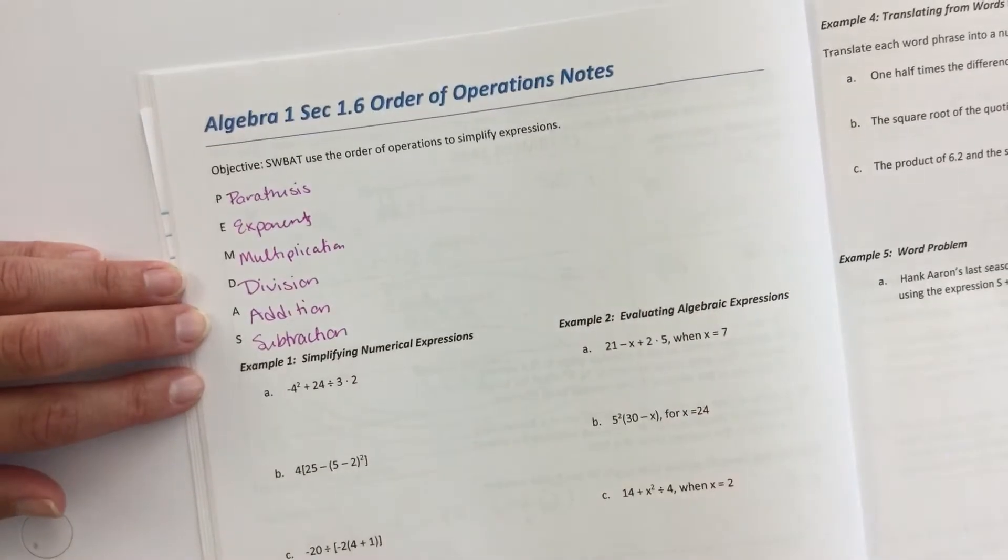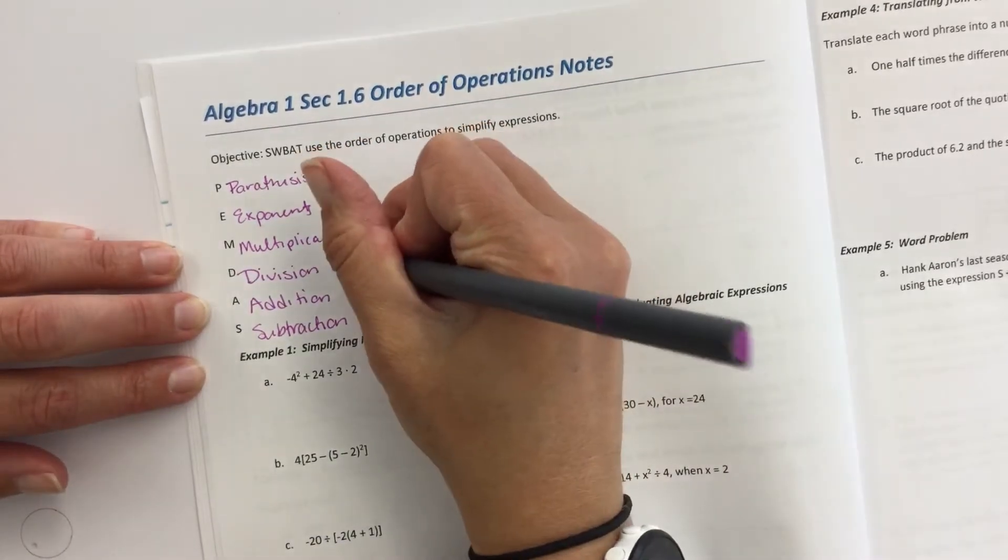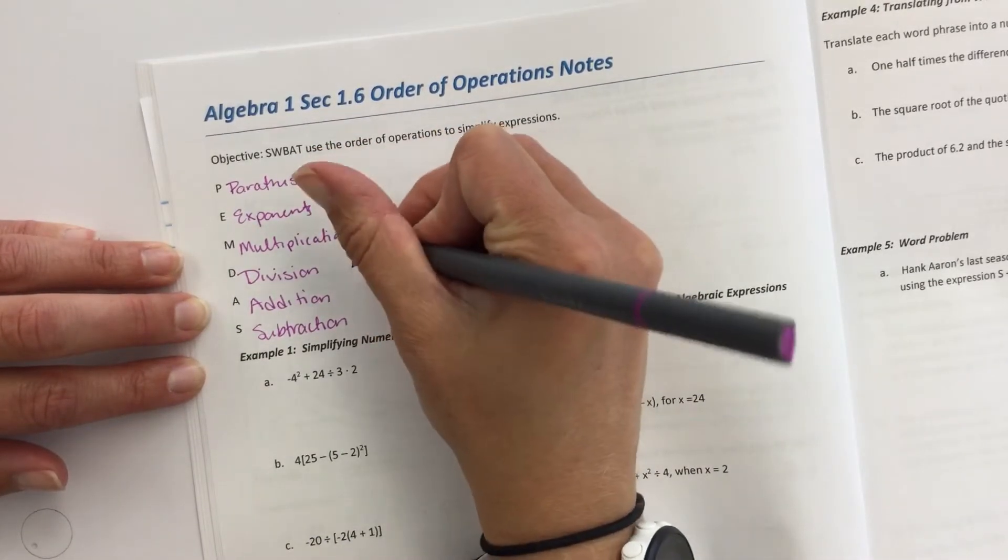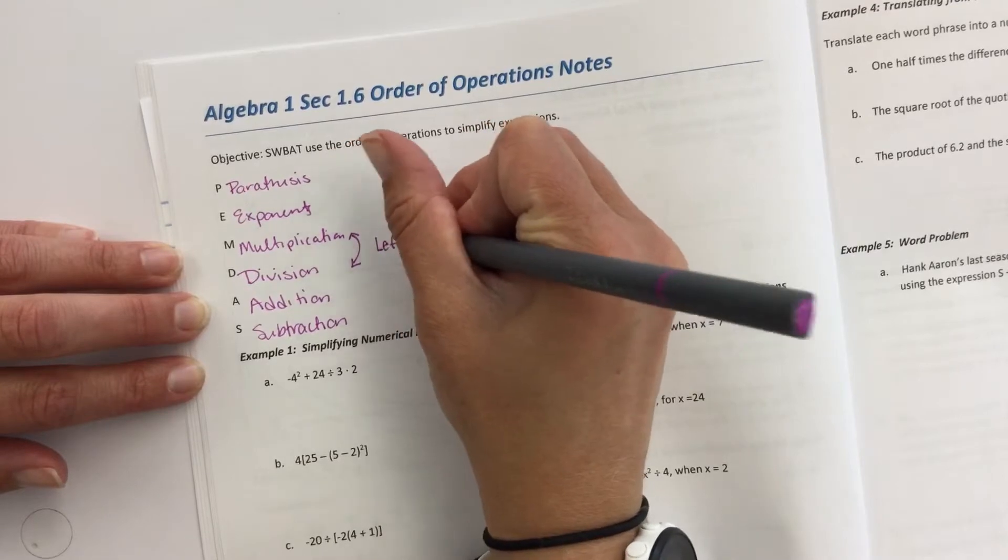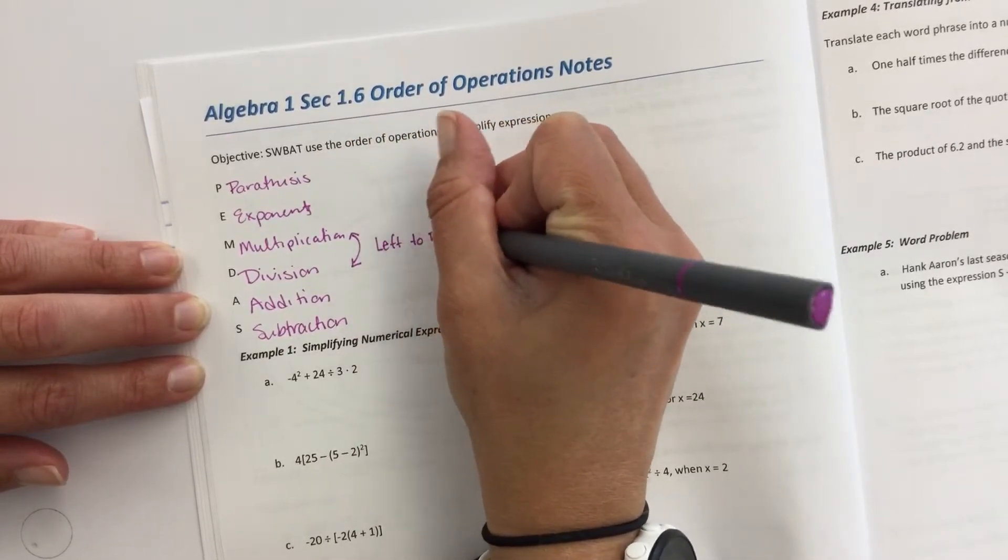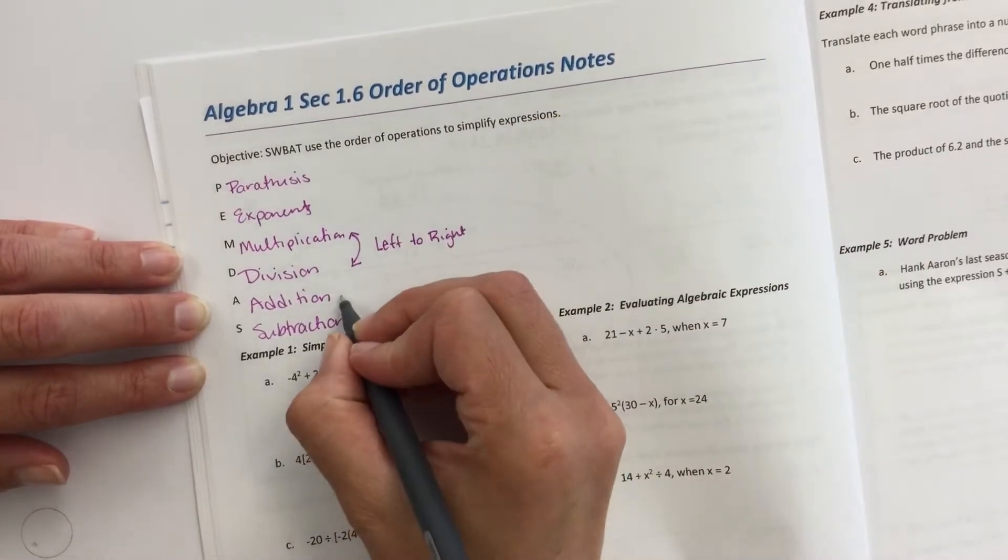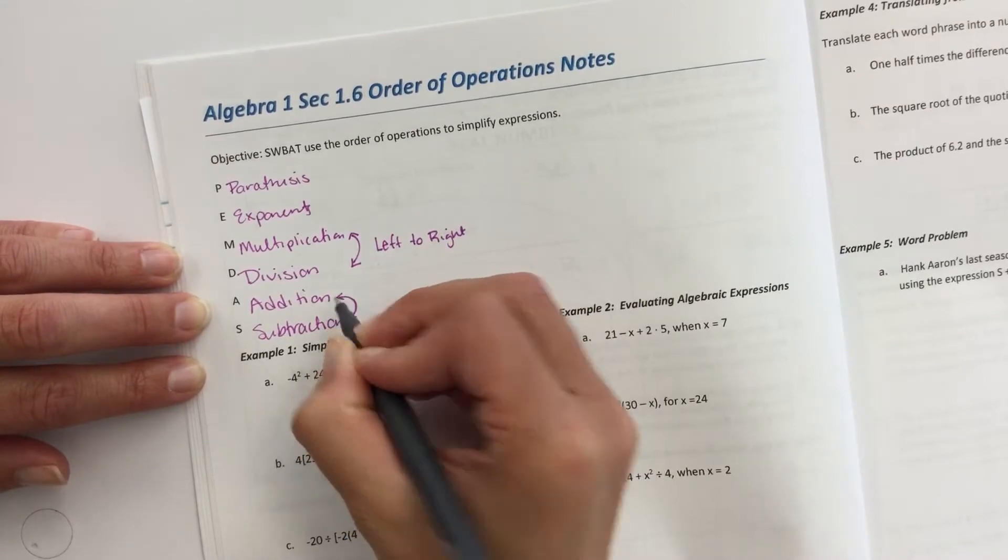So, one thing I need to make sure you guys remember, these two are left to right though, in the problem, multiplication, division, and so are addition and subtraction.